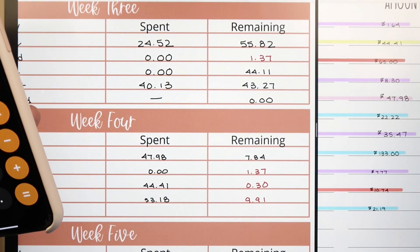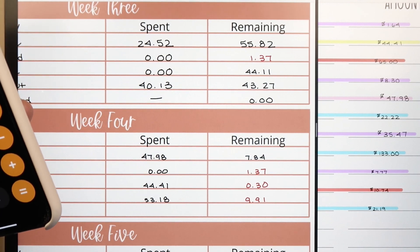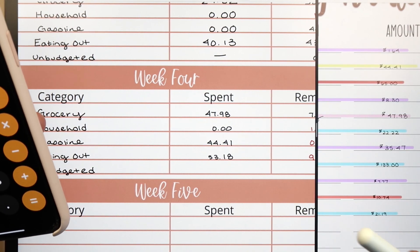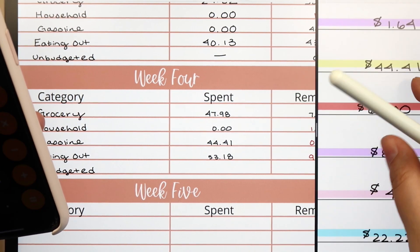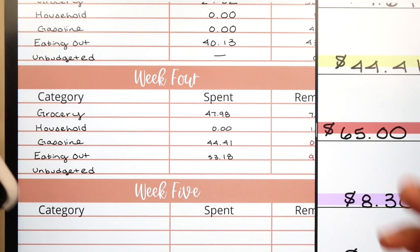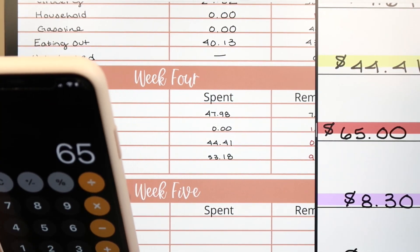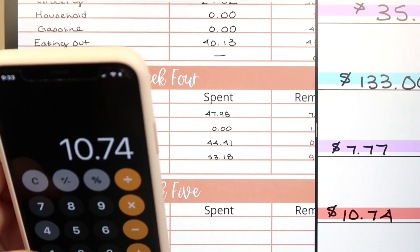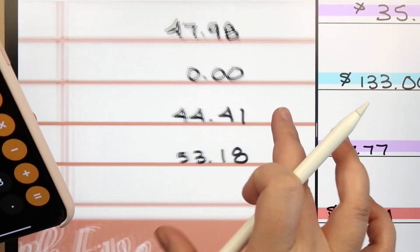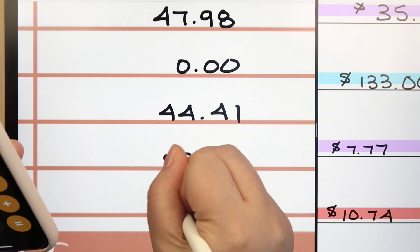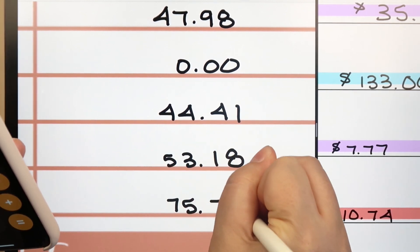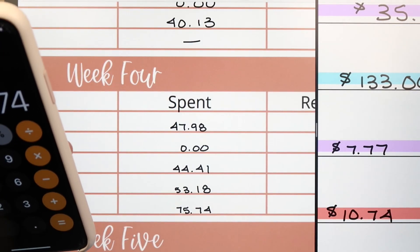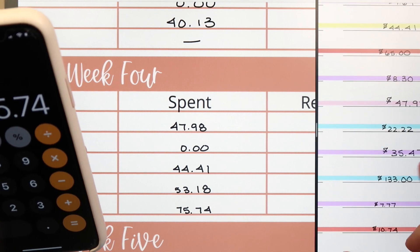We'll probably not eat out this week, or take it from entertainment or something. We had two unbudgeted transactions: Massage Envy for $65, and then $10.74 for the pediatrician for Julia. We do have an HSA card, but I always forget to give it to Andrew. We don't have a duplicate card. Because the bill was so little, we just decided to pay it out of pocket, so that was $75.74.